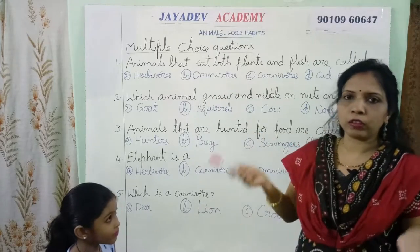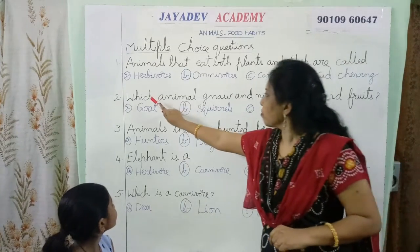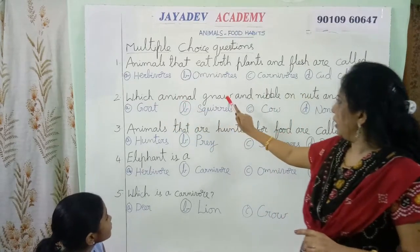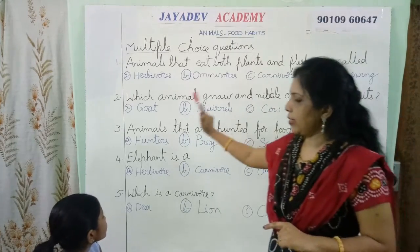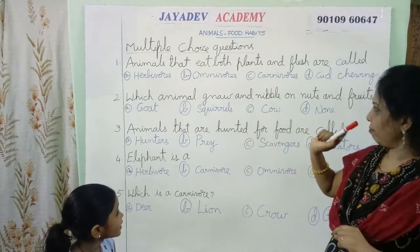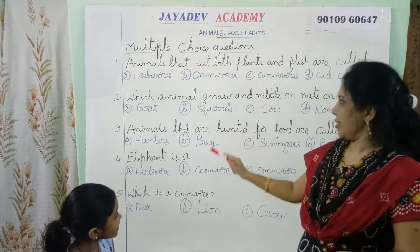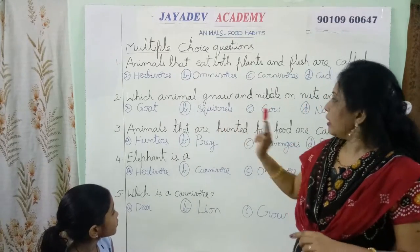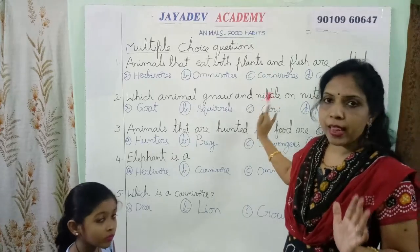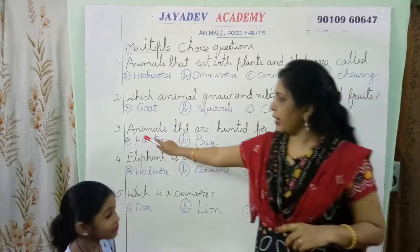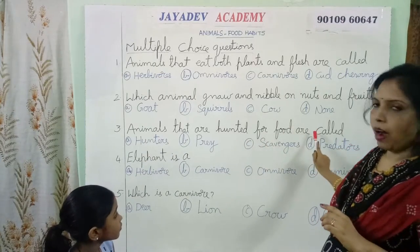Omnivores — they eat both plants and flesh of other animals. And here the second one is: which animal can nibble on nuts and fruits? Is it goat? No. Cow? No. Squirrel? Yes! It is squirrel. Some animals like rabbits, rats, and squirrels — they nibble their food.